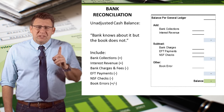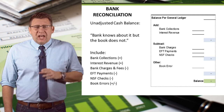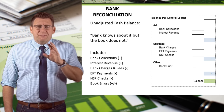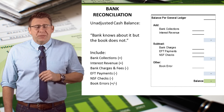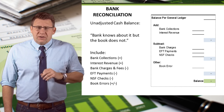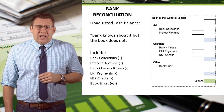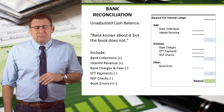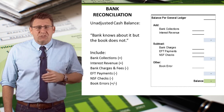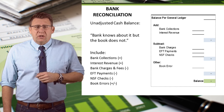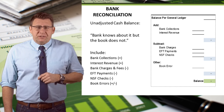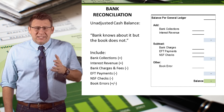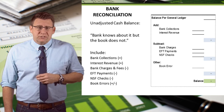To determine if something reconciles the book side, think of it this way: it is stuff the bank knows about, but the book does not. There are many more items that can reconcile the book side. Some of the more common items are bank collections, interest revenue, bank service charges and fees, EFT payments, NSF checks, and book errors.